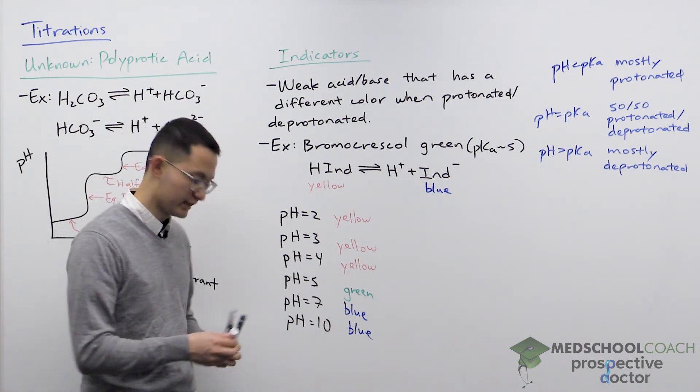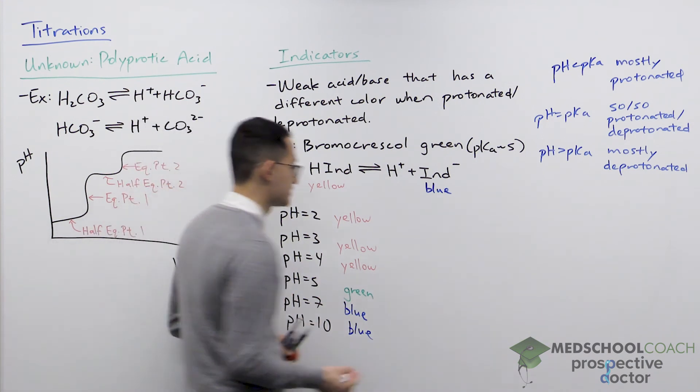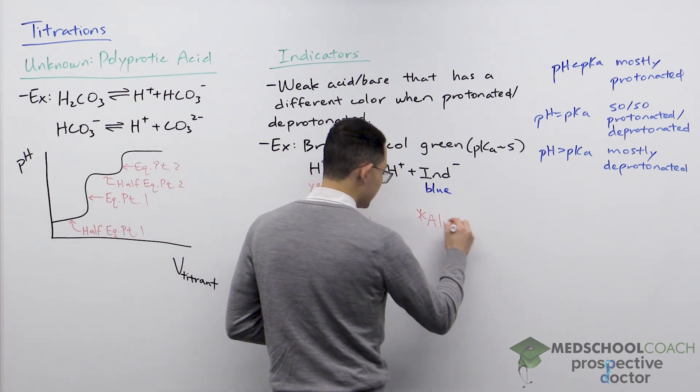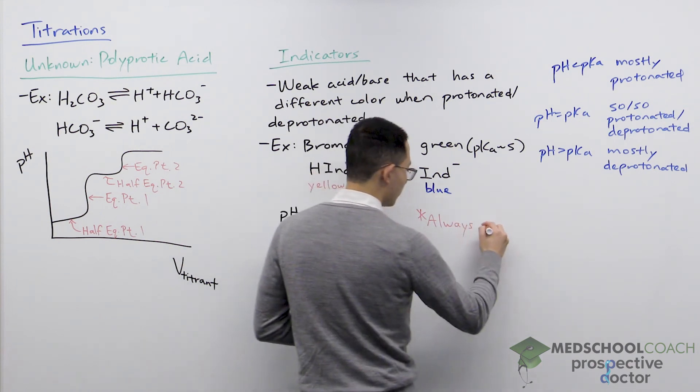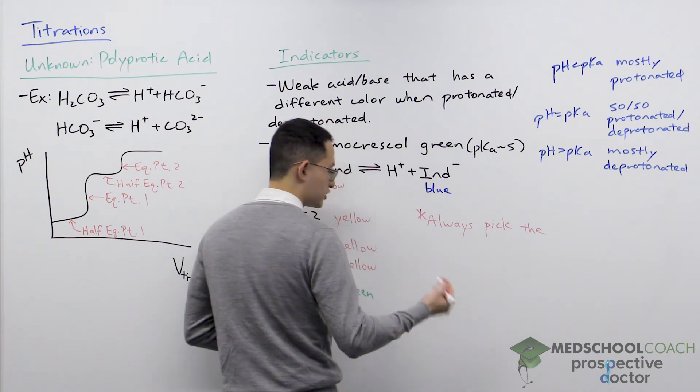So because of that, it actually makes questions on the MCAT about pH indicators very simple. All you have to do is pick the indicator with a pKa closest to the pH you're trying to measure.